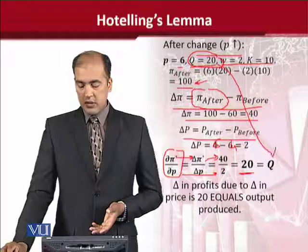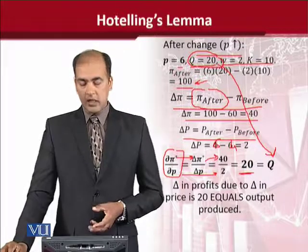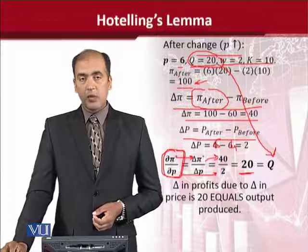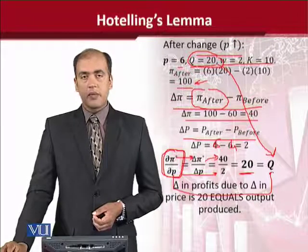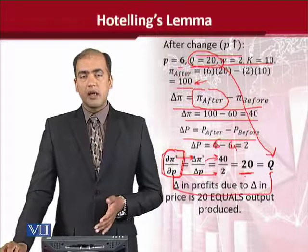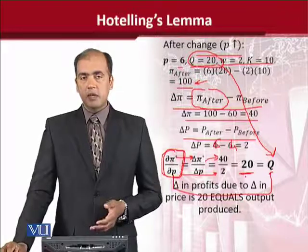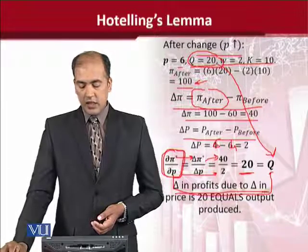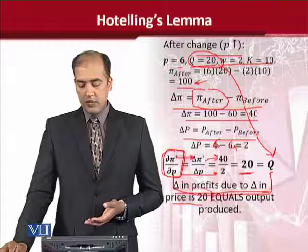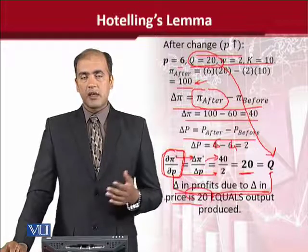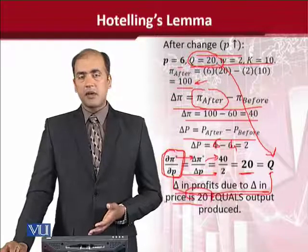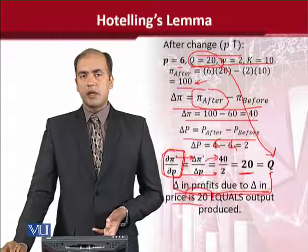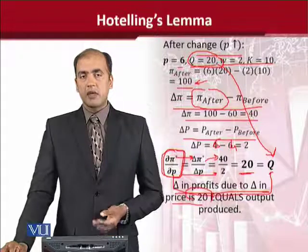So after this calculation, the conclusion is that if we differentiate the profit at maximum level with respect to the price of the output, it will be equal to Q. This was Hotelling's Lemma, which we tried to prove in a very simple numerical way — and it was proved. Putting it in words: change in profits due to change in price is equal to 20, and you observe that the left-hand side equals the right-hand side. So this is what Hotelling's Lemma is — a useful equation that helps us interpret the maximized profit function when it comes to changes in price. Thank you.